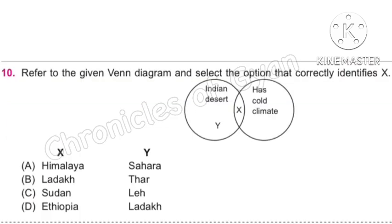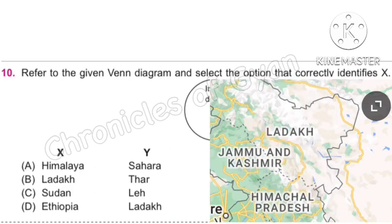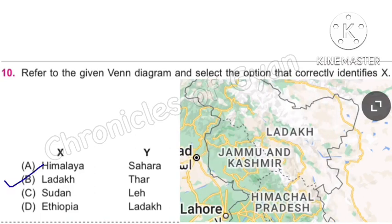Question 10: Refer to the given Venn diagram and select the option that correctly identifies X. According to the Venn diagram, X is an Indian desert that also has a cold climate. Option B, Ladakh, satisfies both conditions, as Ladakh is the cold desert of India which lies in the greater Himalayas. The correct answer is Option B: Ladakh.